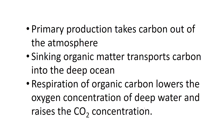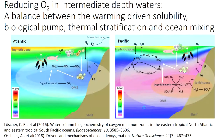To summarize so far: primary production - the formation of organic carbon by photosynthesis - removes CO2 from the atmosphere and from the surface ocean. That then takes the organic matter, which sinks down, effectively removing the carbon from the surface layer of the ocean and taking it out of the grasp of the atmosphere. But that can be returned to the ocean through respiration.